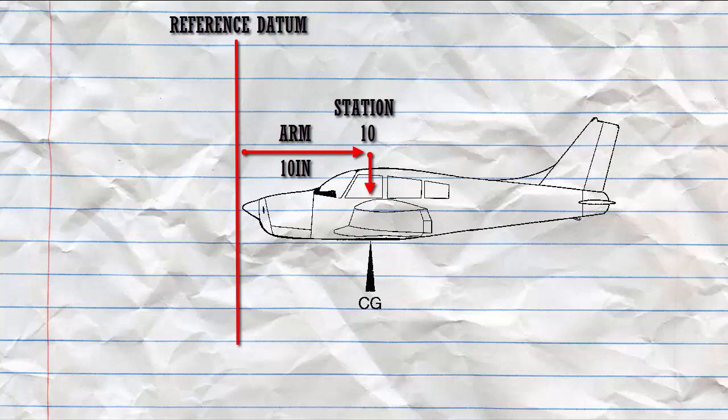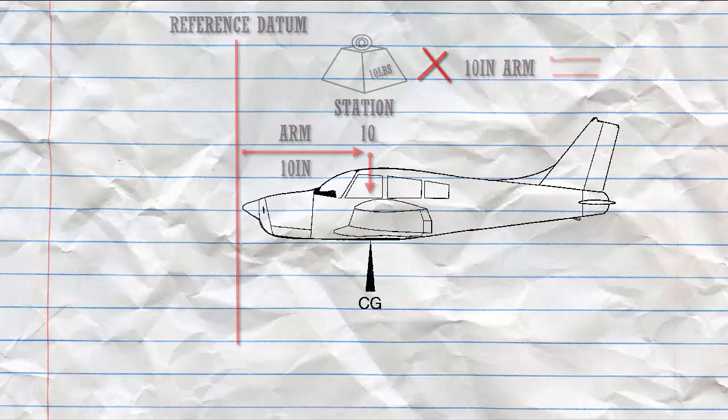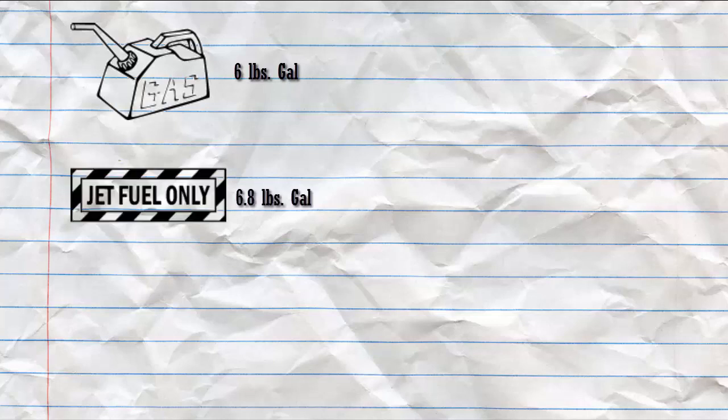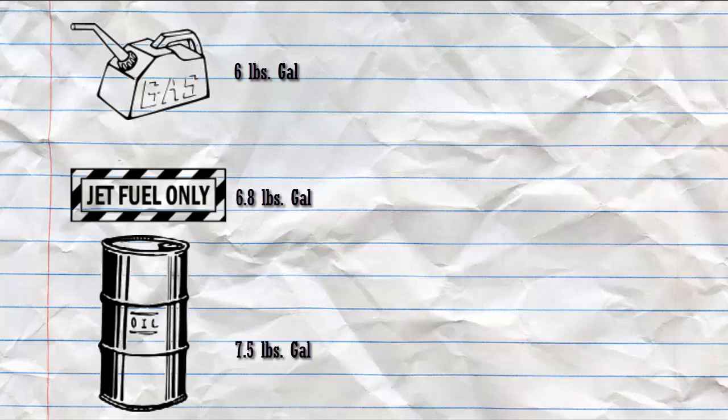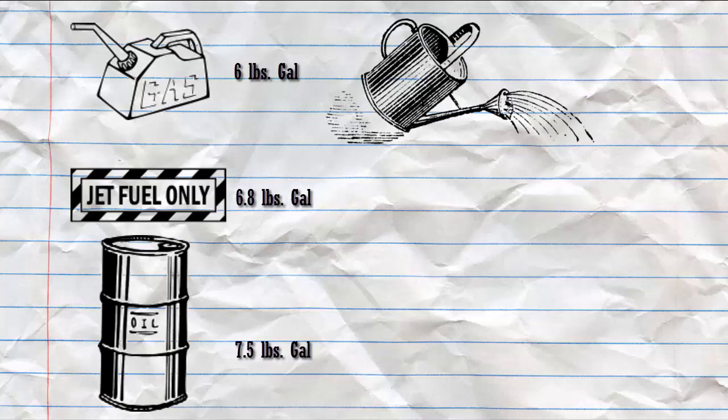Moment: a force that tries or causes an object to rotate. It's a product of a weight of an item multiplied by its arm. We get our moment by multiplying our weight in pounds times our arm in inches and that gives us a moment equivalent to inch pounds. Standard weights: Gasoline at 6 pounds a gallon, Jet A 6.8 pounds a gallon, Oil 7.5 pounds a gallon, and Water at 8.35 pounds a gallon.